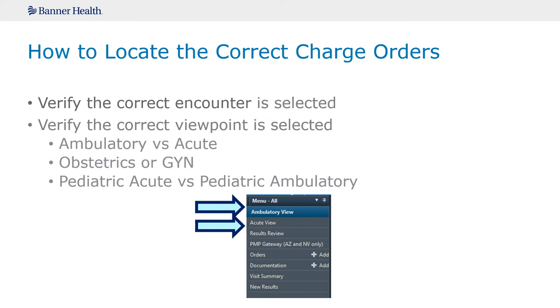Verifying that you are in the correct encounter is the first step in generating the correct charge orders. Once in the correct encounter, select the correct viewpoint for either ambulatory or acute view. Additionally, depending on your specialty, you may have a specialty view to select.